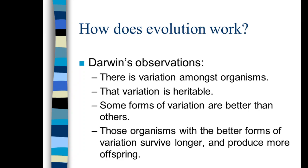Darwin's third observation is that some forms of variation are better than others. It's better to have good eyesight than poor eyesight, better to have good hearing than bad hearing. Having a good sensory system is positive — it enables you to detect threats. Similarly, if you have alleles that code for type 1 diabetes, your chances of living very long are reduced. So you can think of all sorts of attributes that are preferred over others.